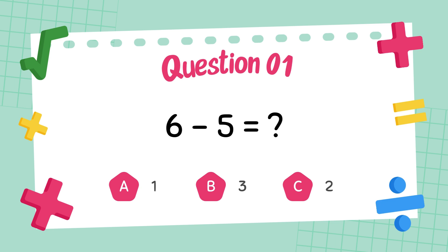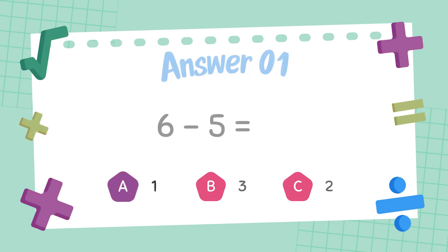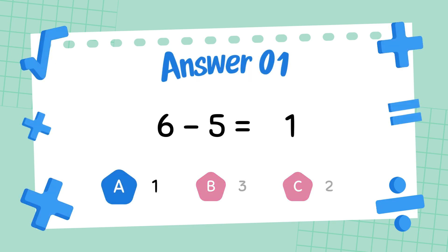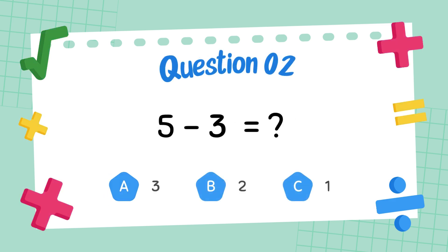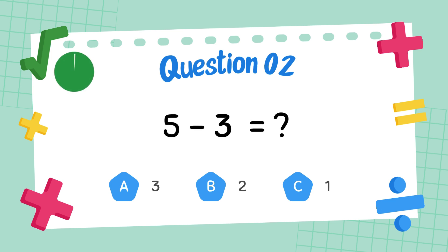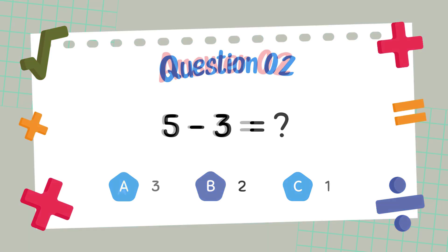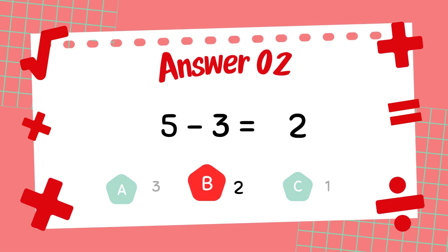What is 6 minus 5? The answer is 1. What is 5 minus 3? The answer is 2.